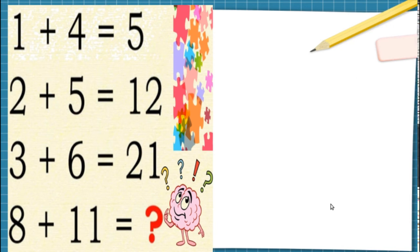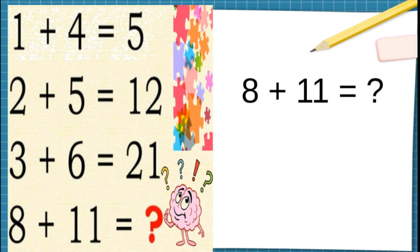So let's solve our final equation, which is our puzzle. 8 plus 11 is not equal to 19. In normal maths, yes, it is 19. But